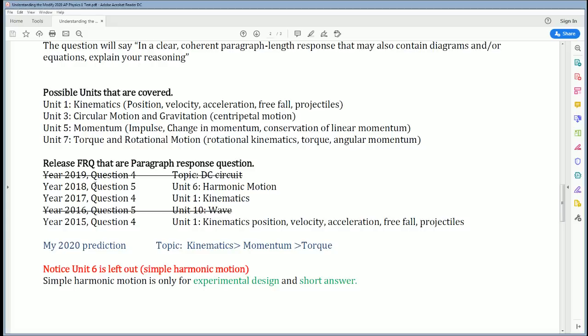These are the released FRQs that are paragraph response questions since the test was recreated. In 2019, it was Question 4, but the unit was DC circuits, which was removed. In 2018, it was Question 5, Unit 6, harmonic motion. In 2017, it was Question 4, which covered dynamics. In 2016, it was Question 5, Unit 10, waves, which was removed for this year's test. And in 2015, it was Question 4, Unit 1, dynamics.